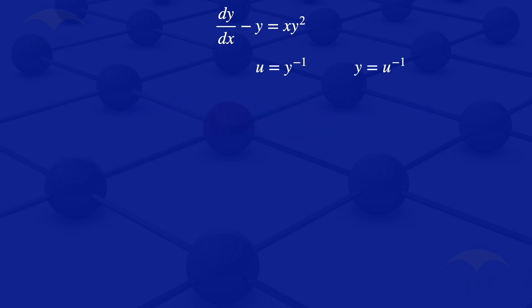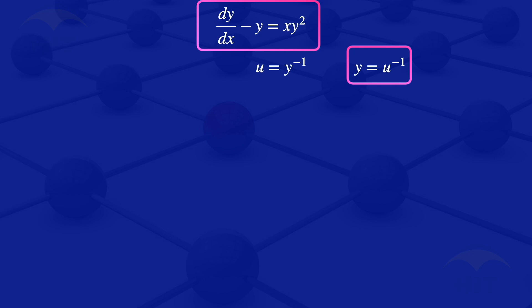I will now substitute this equation into the highlighted ODE. Wherever we have Y, we replace it with U to the power minus 1. So our equation becomes: the derivative of U to the power minus 1 with respect to X, minus U to the power minus 1, is equals to X multiplied by U to the power minus 2.